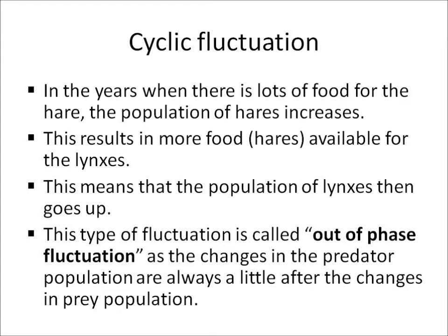If the hare's got lots of food, then the population of hares is going to go up. Now if there are more hares, then there's more food available for the lynxes, so a little bit later the population of lynxes is going to go up. And equally, if the population of hares then goes down, eventually the population of lynxes will go down. This type of fluctuation is called out-of-phase fluctuation, as the changes in the predator population — the lynx population — always happen a little bit after the changes in the prey population.